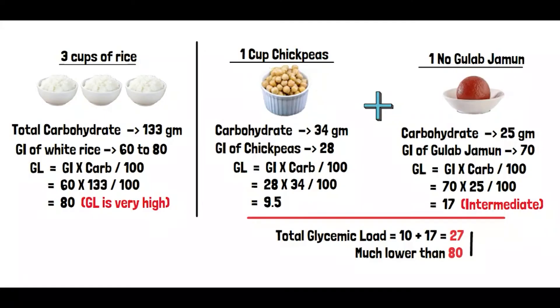If I really wanted a gulab jamun that day, I would have eaten a salad rich in fiber, probably had a little bit of lentils for protein, and after that I would have enjoyed that gulab jamun. Moderation is the key, and instead of eliminating certain foods from your list, focus on balance.